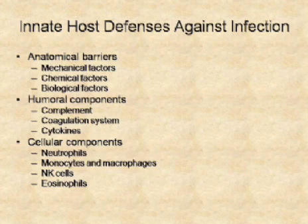Before we get to the actual cells, there are other components of the nonspecific immune system. Some of them are just anatomical barriers — mechanical factors, chemical factors, biological factors. Then we have humoral components, which we'll talk about next hour, as complement is probably the most important. And then we have the cellular components: neutrophils, monocytes, macrophages, K-cells, and eosinophils.